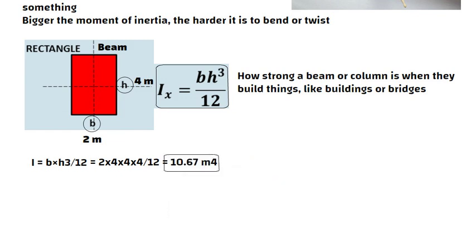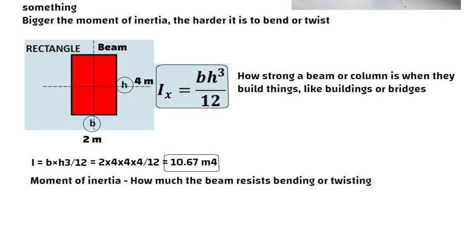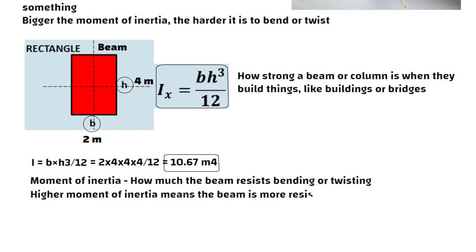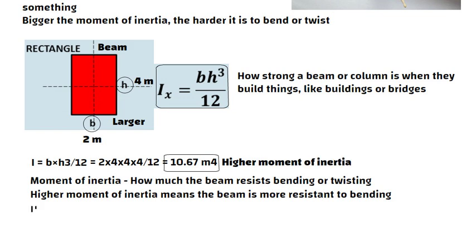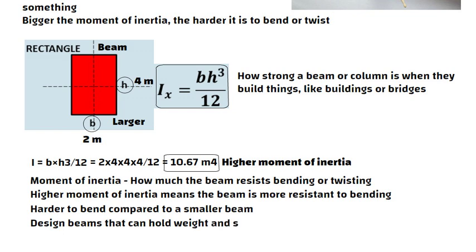The moment of inertia tells us how much the beam resists bending or twisting. A higher moment of inertia means the beam is more resistant to bending. In this case, the beam is larger and has a higher moment of inertia, so it would be harder to bend compared to a smaller beam. This calculation helps engineers design beams that can hold weight and stay strong without bending too much.